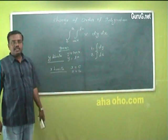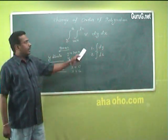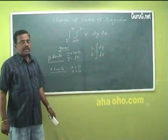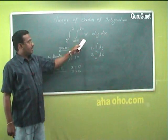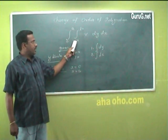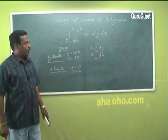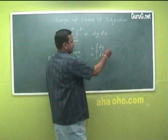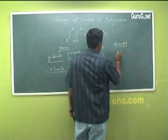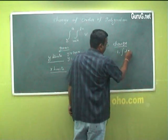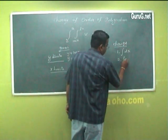The order of integration can be identified by using the limits only, not by the order of dy and dx — it may be either dx or dy. The order of integration is: first integrate with respect to y, then with respect to x. Now I am going to change the order of integration — that is, first integrate with respect to x, then with respect to y.